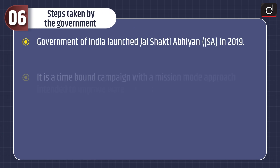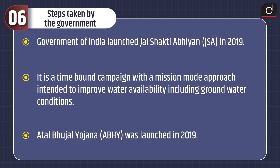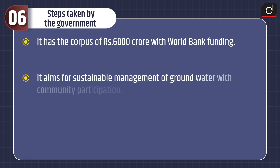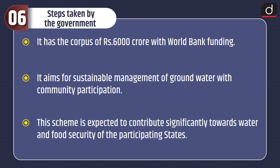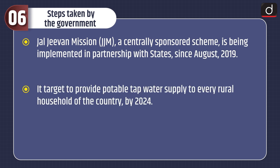Now let's have a look at the steps taken by the government. The Government of India launched Jal Shakti Abhiyan (JSA) in 2019, a time-bound campaign with a mission mode approach intended to improve water availability including groundwater conditions. Atal Bhujal Yojana (ABHY) was also launched in 2019 with a corpus of Rs. 6000 crore with World Bank funding, aiming for sustainable management of groundwater with community participation, expected to contribute significantly towards water and food security. Jal Jeevan Mission (JJM), a centrally sponsored scheme implemented in partnership with states since August 2019, targets providing potable tap water supply to every rural household by 2024.